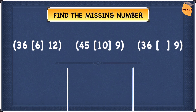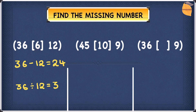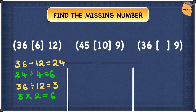Let's subtract first: 36 minus 12 gives you 24, and 24 is nowhere near 6. So let's try division: 36 divided by 12 gives you 3, and 3 is nowhere near 6 either. This means sometimes in these questions you will have to do two steps to find the middle number. To get from 24 to 6, we can divide by 4 — so 24 divided by 4 gives you 6. To get from 3 to 6, we can multiply by 2 — so 3 times 2 gives you 6. One of these two-step rules is the correct one.